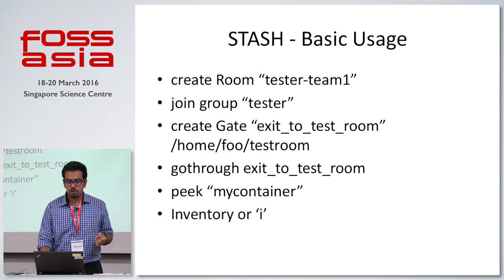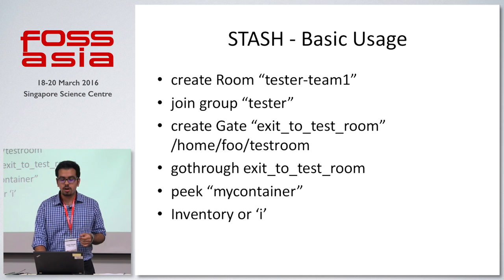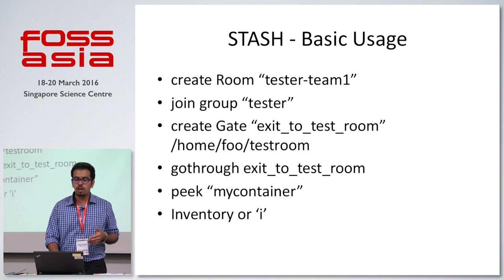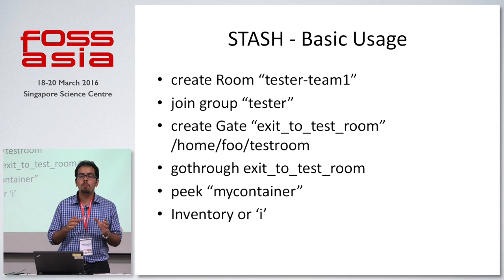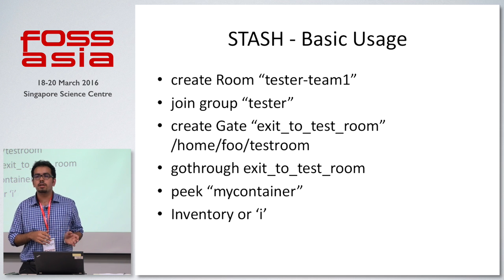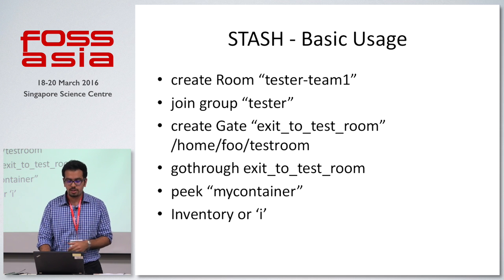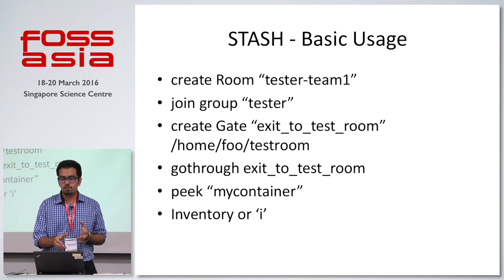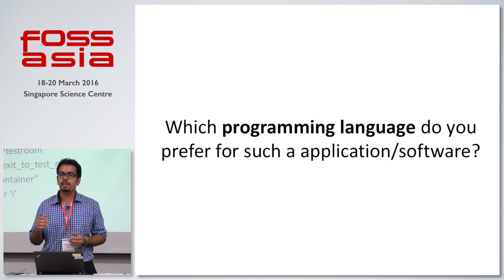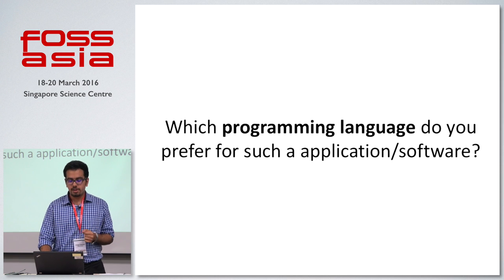These are some basic usage examples of the Stash tool — there's no complicated git commit or git push, no changing to another branch. For example: go to my container, list all the files, exit the test room as a gate — you go through that gate, you get into someone else's room, something like that.